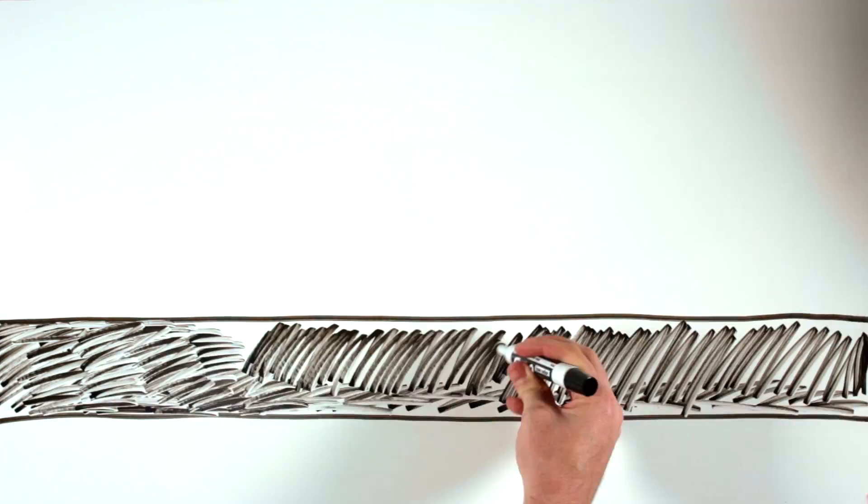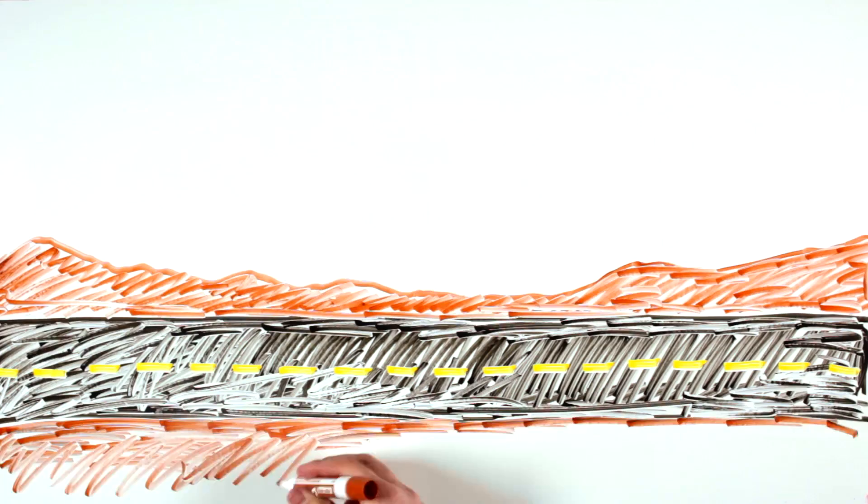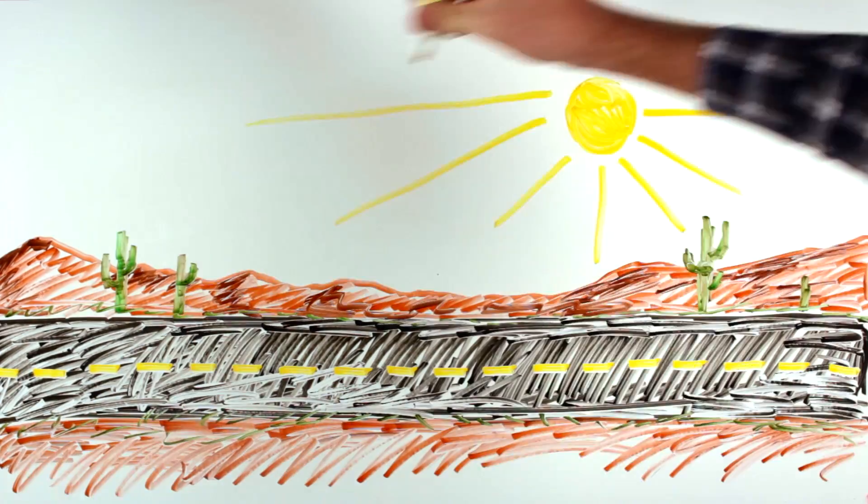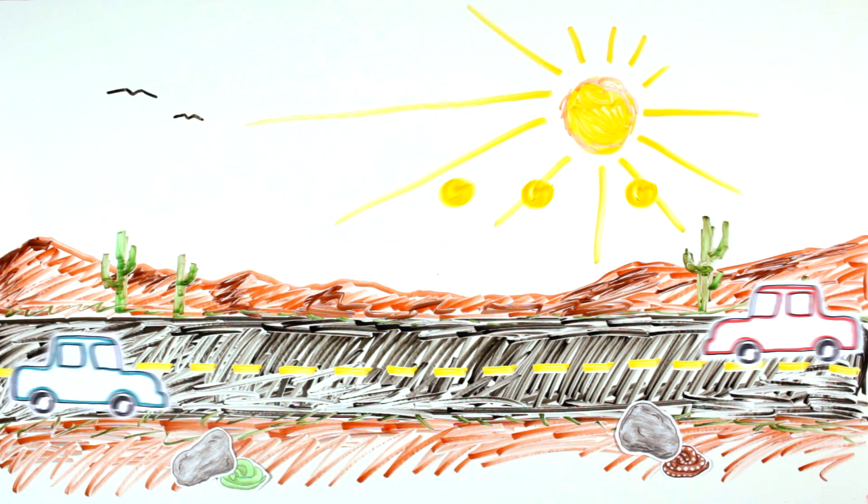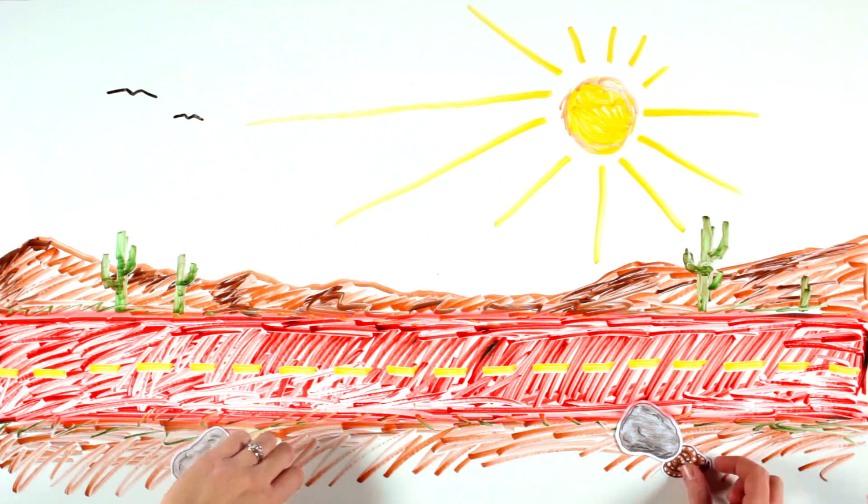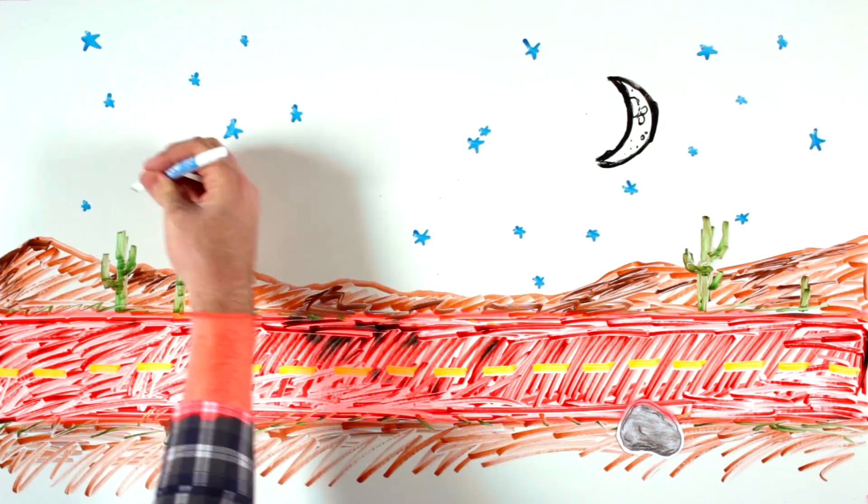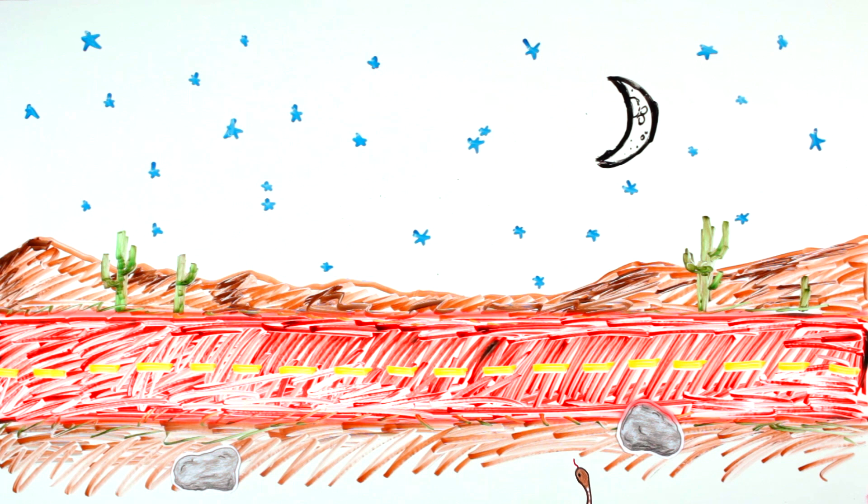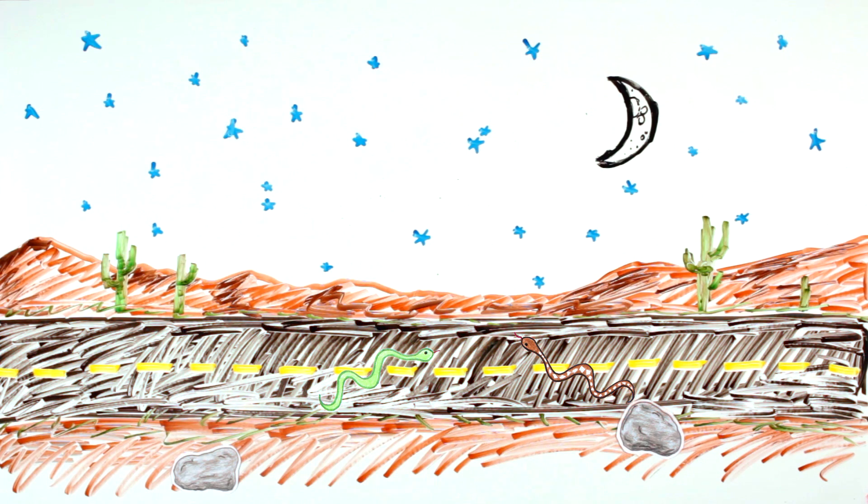Desert snakes make use of the thermal inertia of an asphalt road to regulate their body temperature because they are cold-blooded. During the day, the asphalt warms up in the sunshine, and the snakes sleep under rocks. But at night, when the temperature gets cool again, the snakes come out and warm themselves on the road, because the road has a higher thermal inertia than the air and sand of the desert, so it releases heat much more slowly as the night cools.